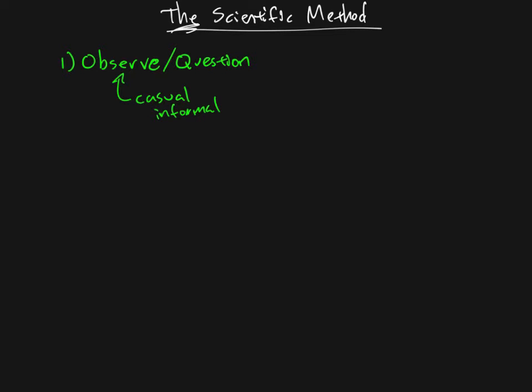A lot of the time science just gets started by somebody noticing something, wondering about the world and why it's working that way. The example in the textbook is pretty good — people seem more depressed in winter than in summer. So you're wondering: why is that the case?